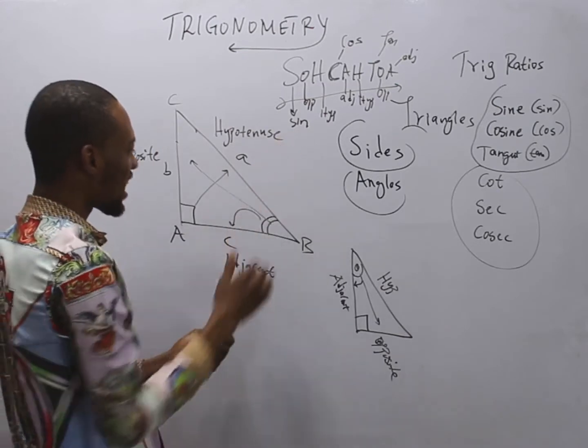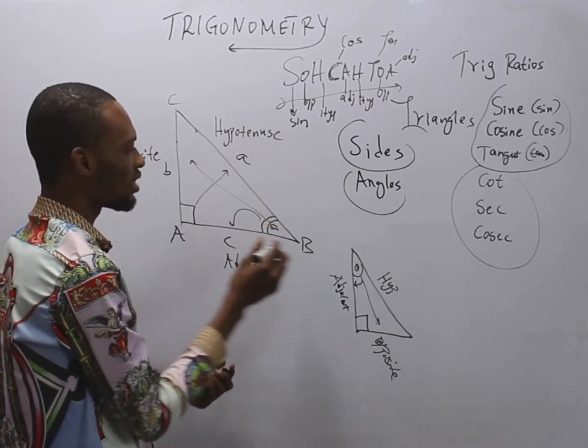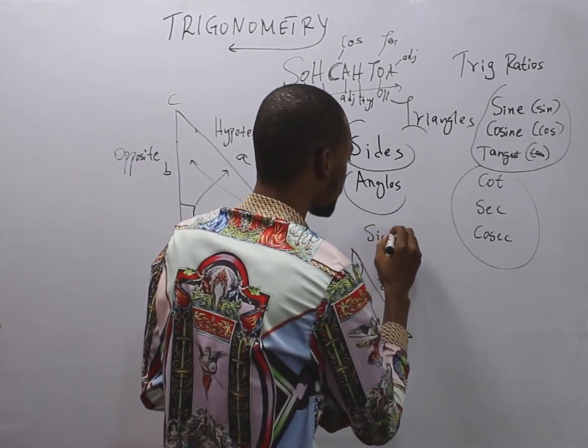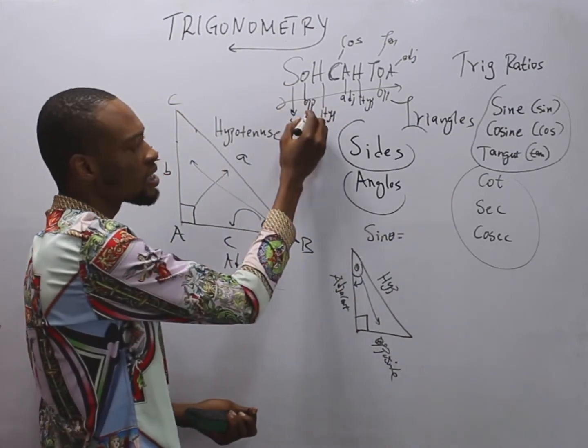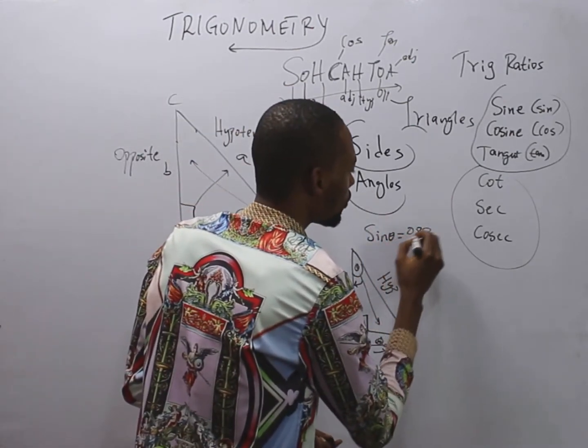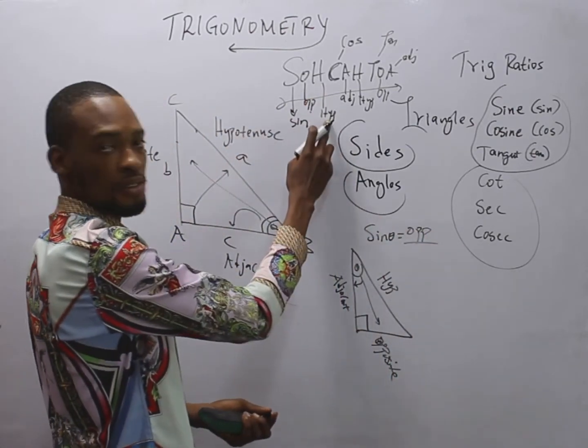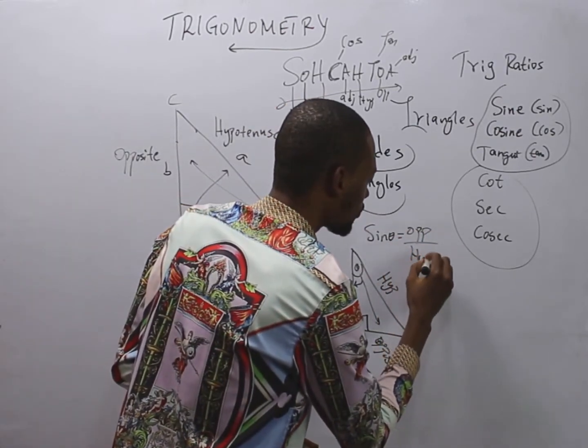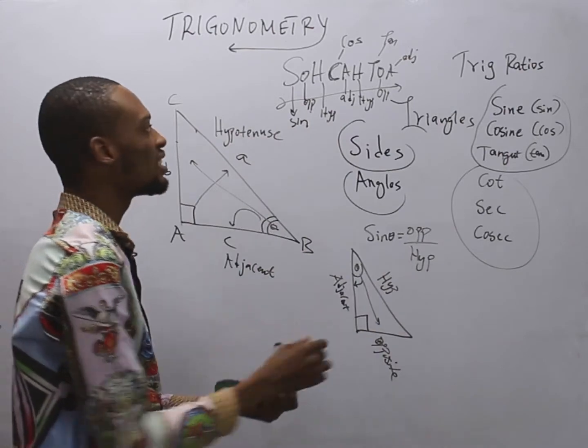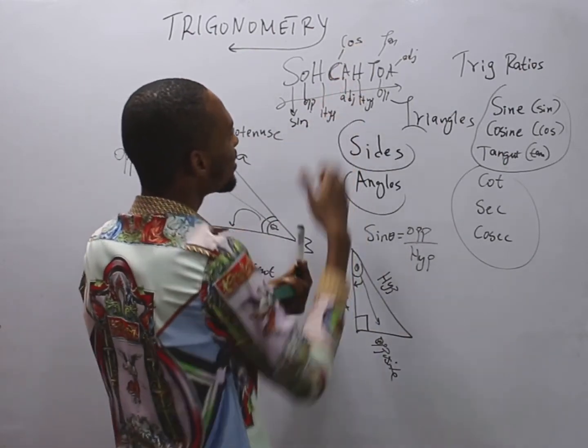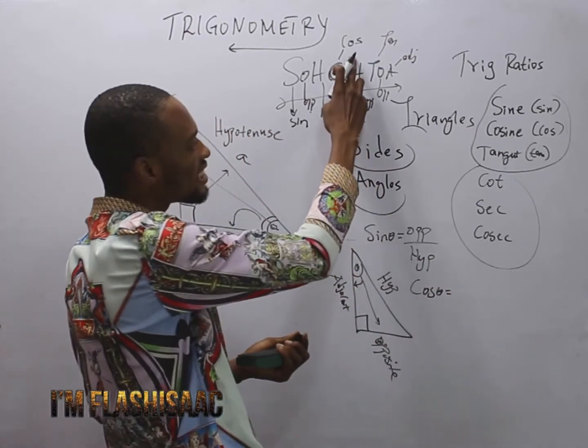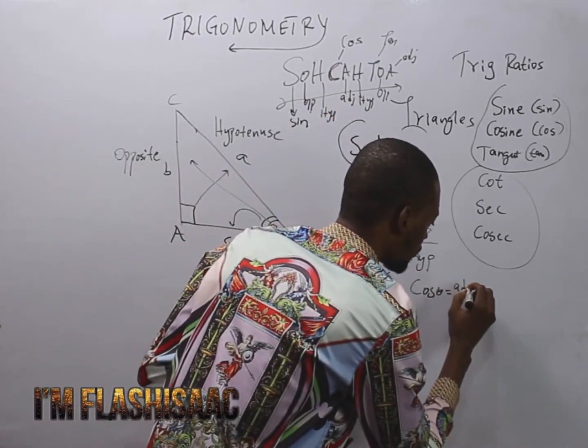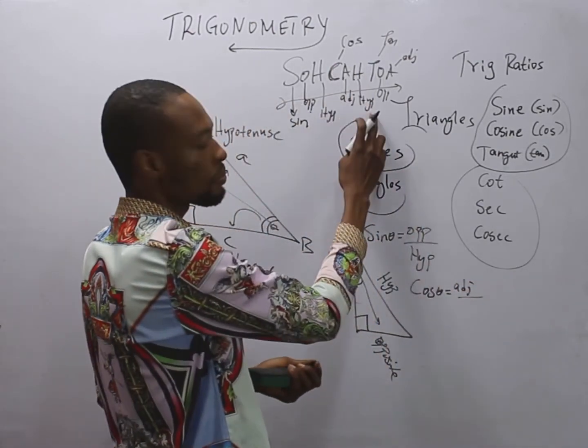What does this tell you? It means sine theta. These are the angles theta. Sine of this angle is equals opposite OPP over hypotenuse. Similarly, cos theta is equals adjacent over hypotenuse.